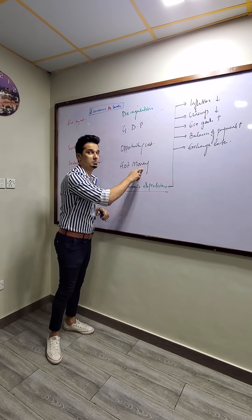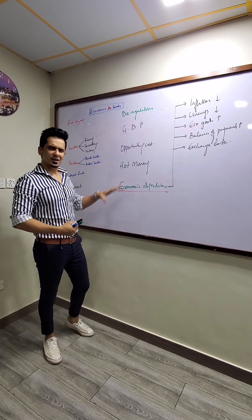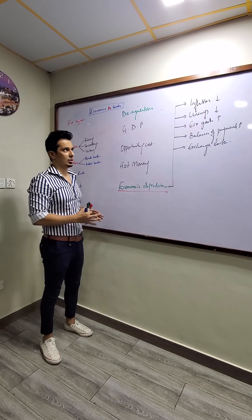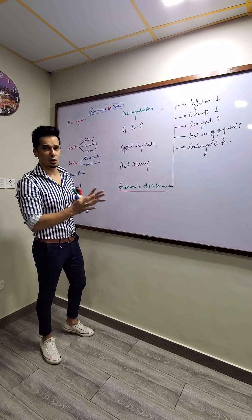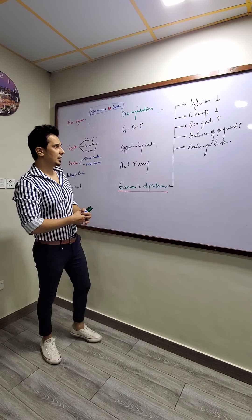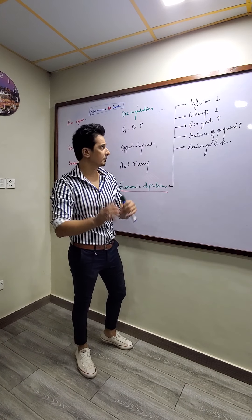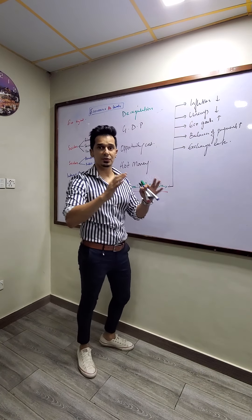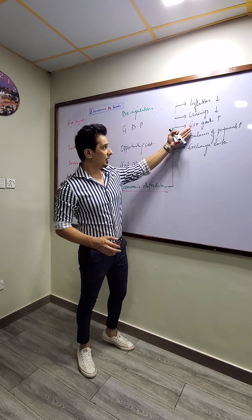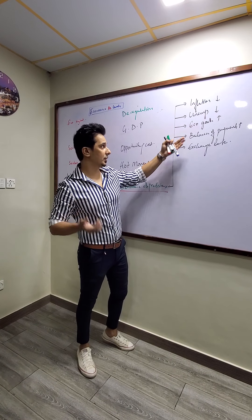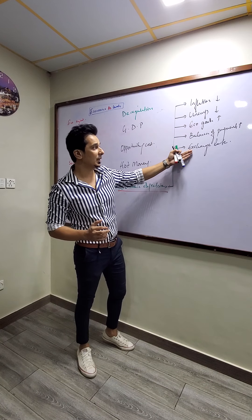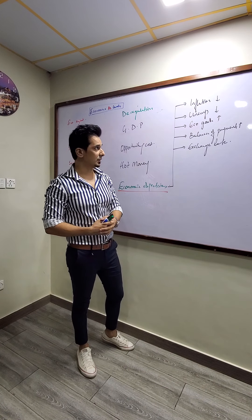Every economy has objectives and these objectives are five main objectives. Economic objective number one is reducing the amount of inflation, reducing the amount of unemployment, achieving higher economic growth, improving balance of payment and controlling the exchange rate.